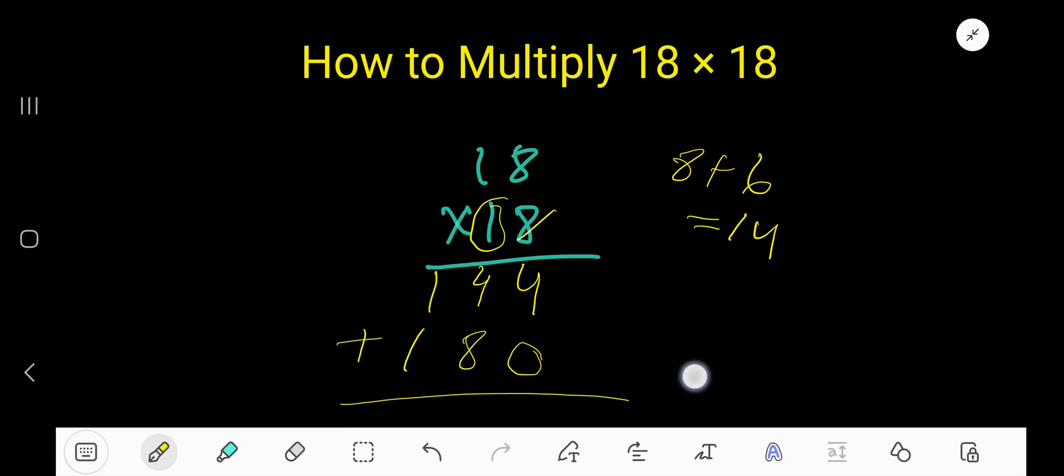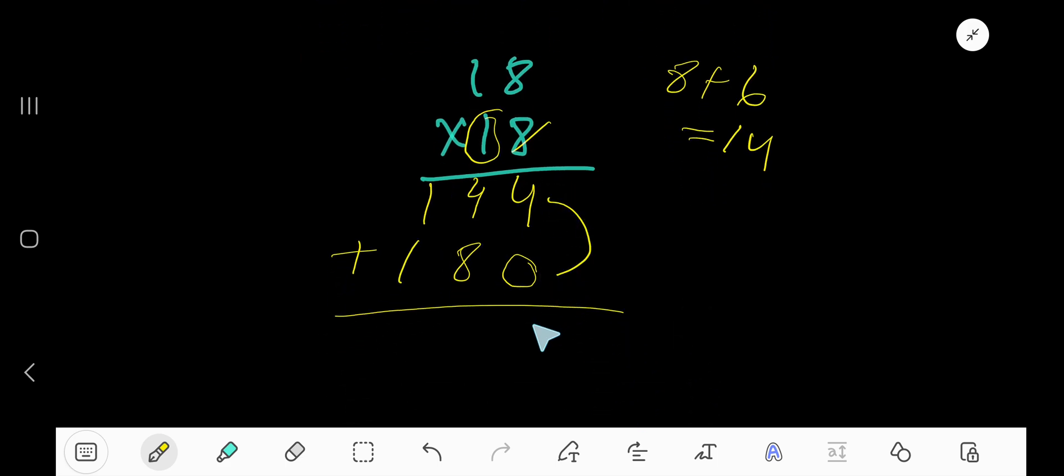Now, you have to add. 4 plus 0 is 4. 8 plus 4 equals 12. Write 2 and carry 1 to the next column.